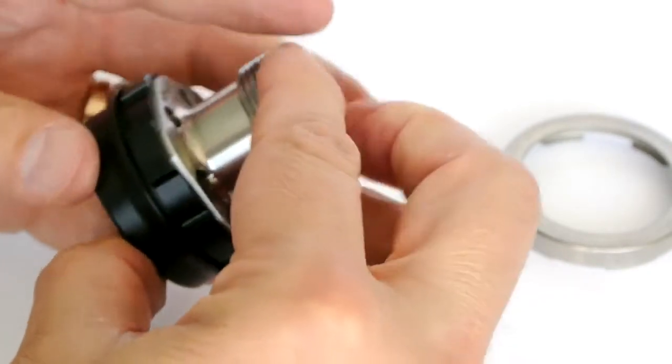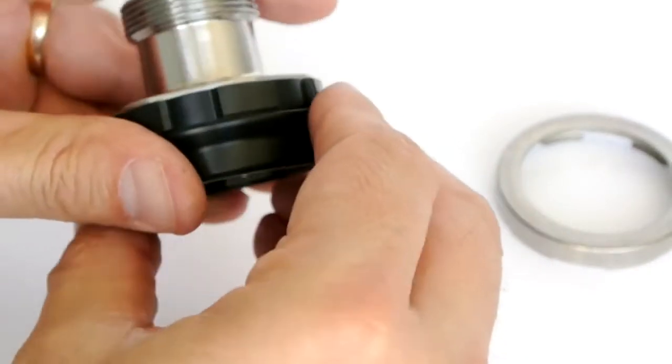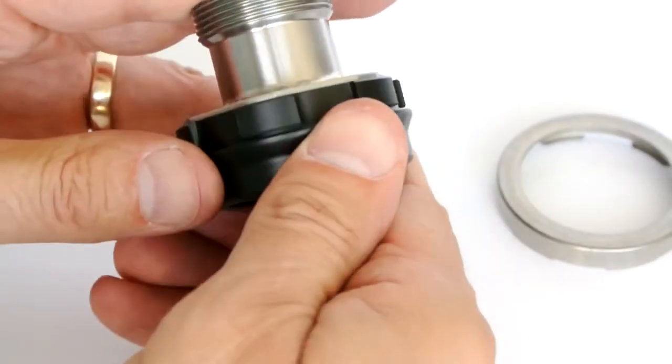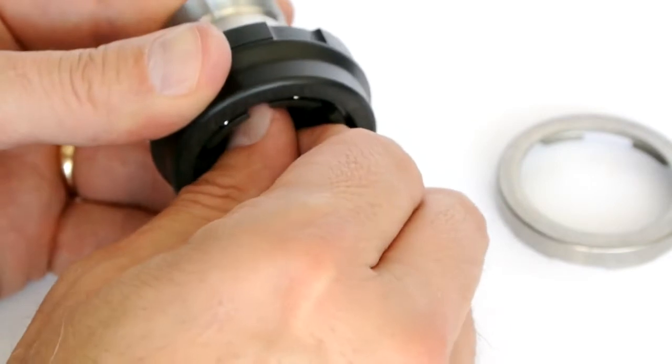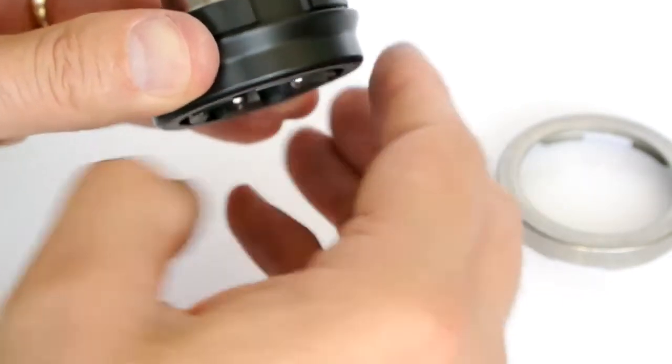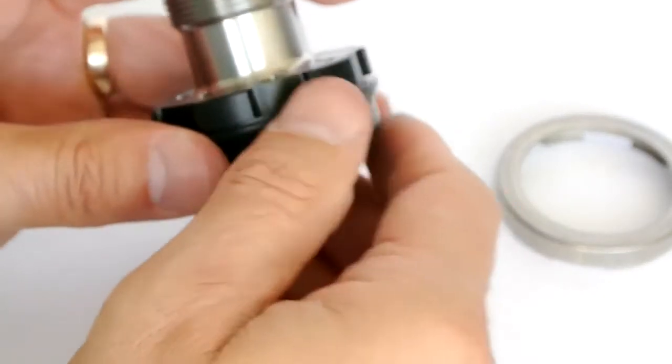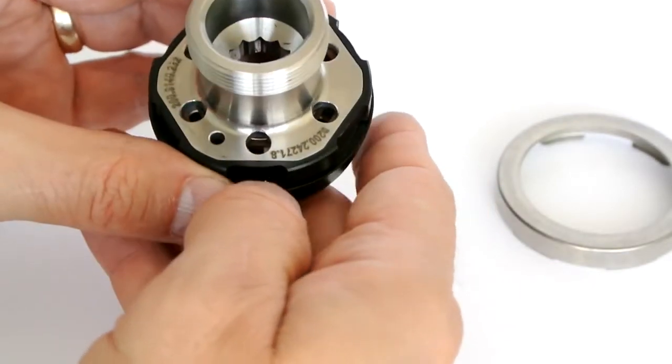Now when you put it together, it might not seat fully. If it stops about like this, basically parallel, take your fingers on the grippers and just give them a twist. And that's all it takes to get that to go together.